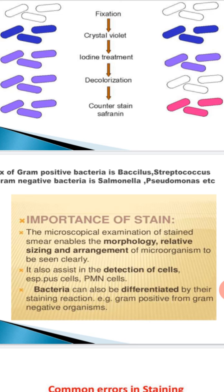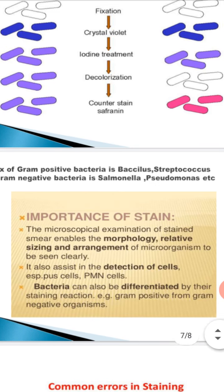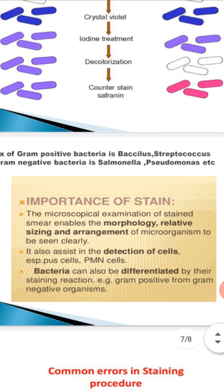For example, gram positive bacteria include Bacillus and Streptococcus. When doing this experiment, sometimes there are errors that occur in the staining.